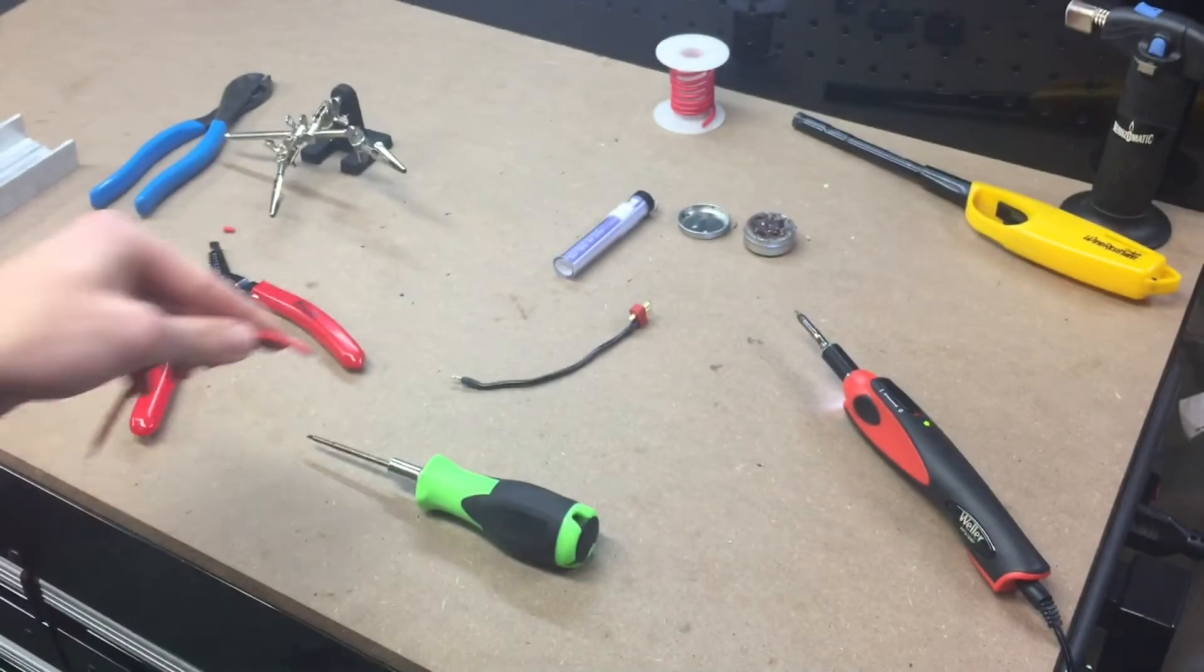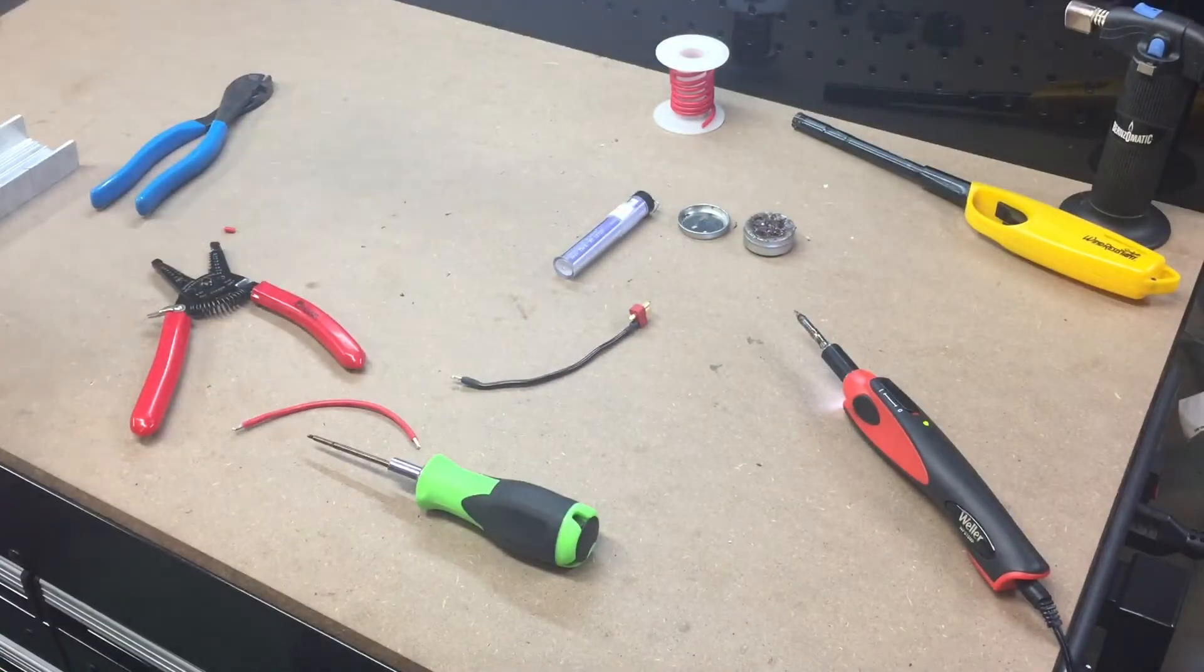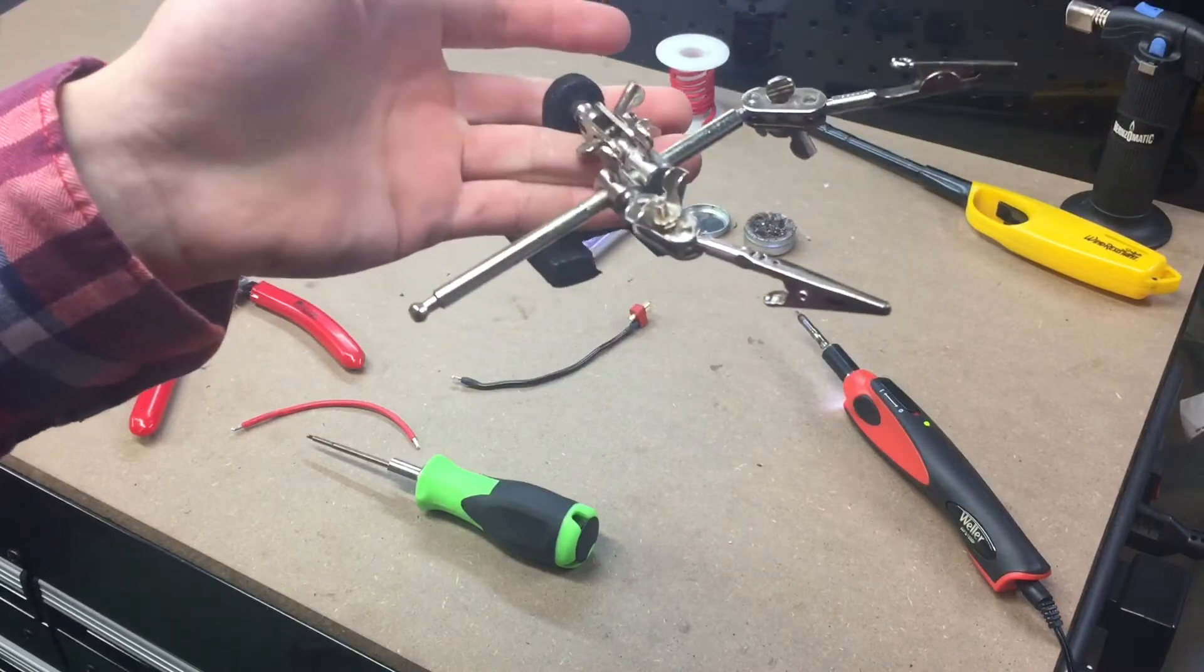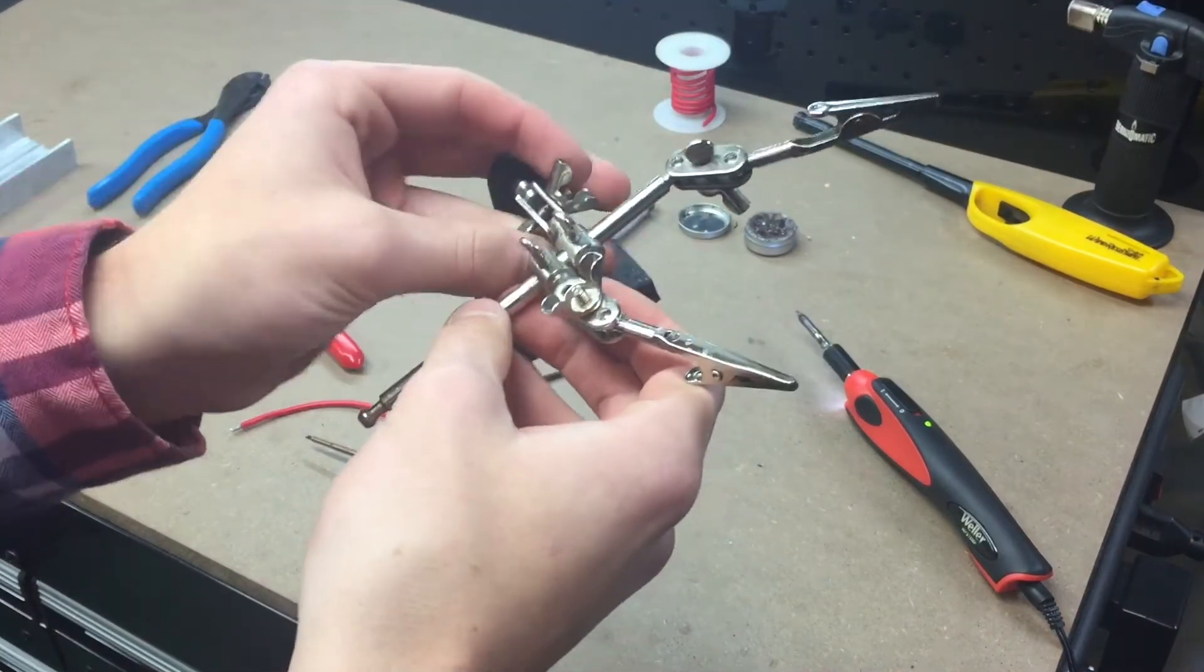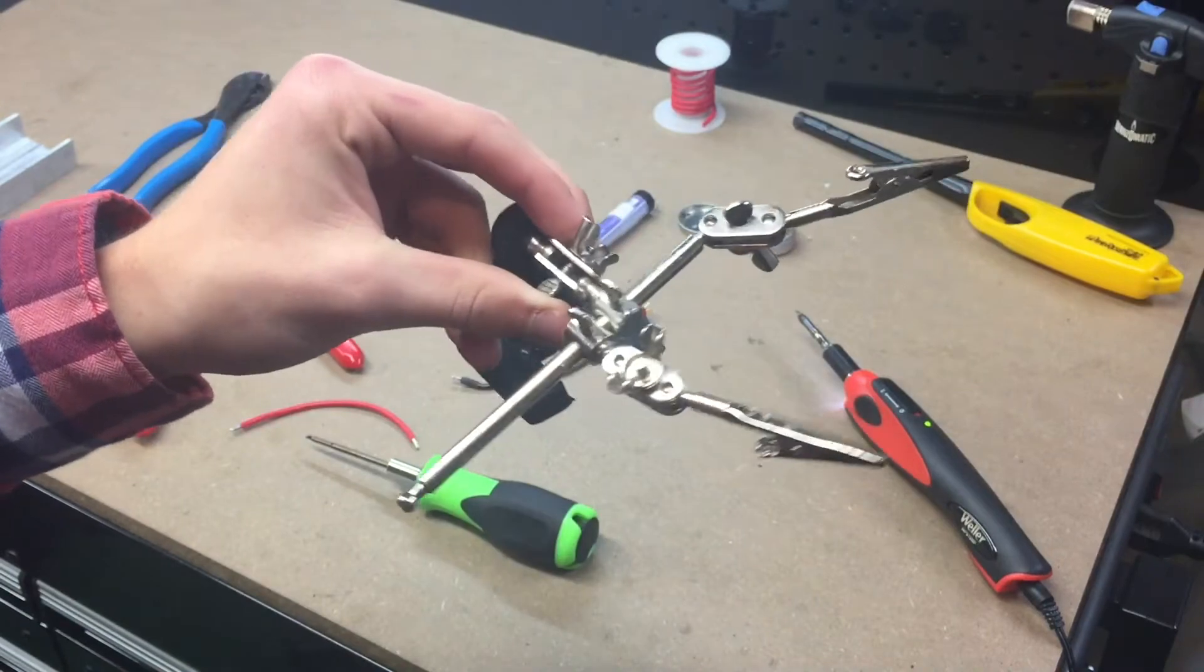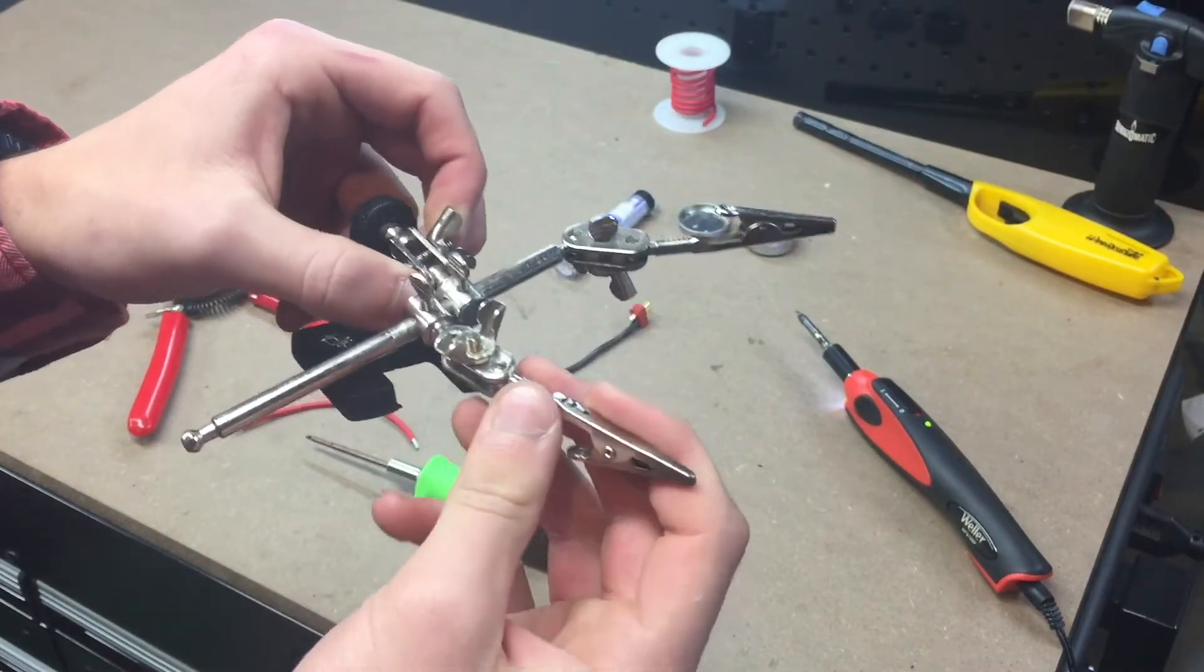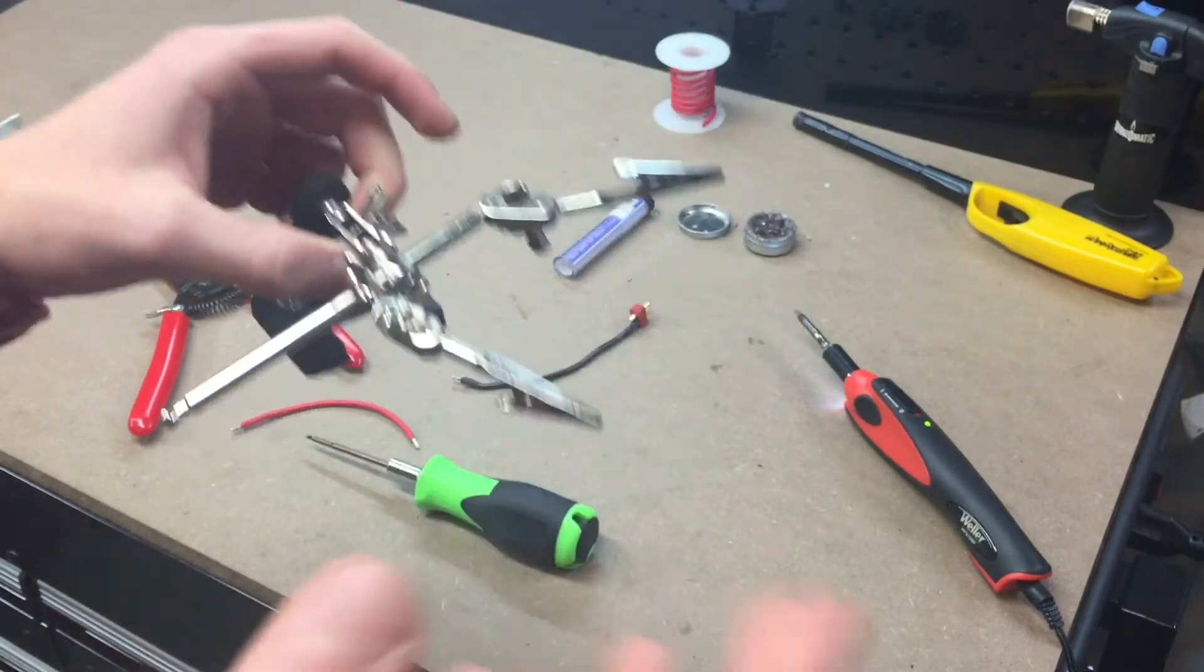Something else I'll be using here - this is a set of helping hands. It comes with a magnifying glass that you can put on it, but I took it off because it was kind of difficult to balance it all right. I kind of have the hands set up a little weird, but I'll show you how it works for me.